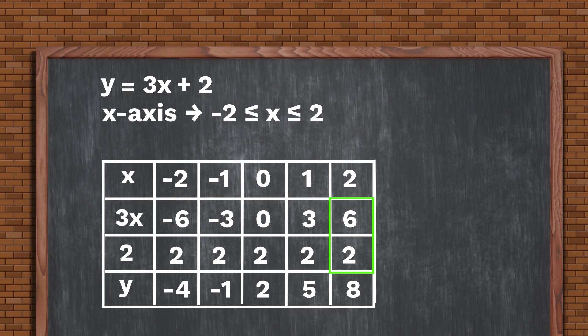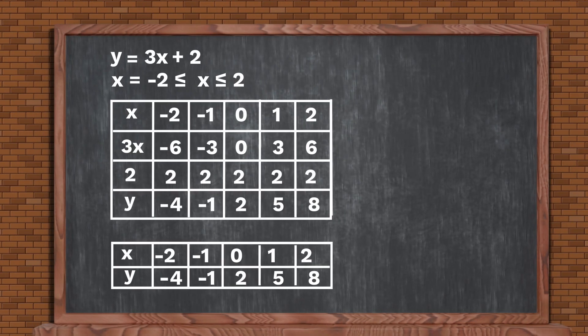Now that our table is filled, we just bring out the rows x and y in a separate table, and this table is used to plot the graph of the function.